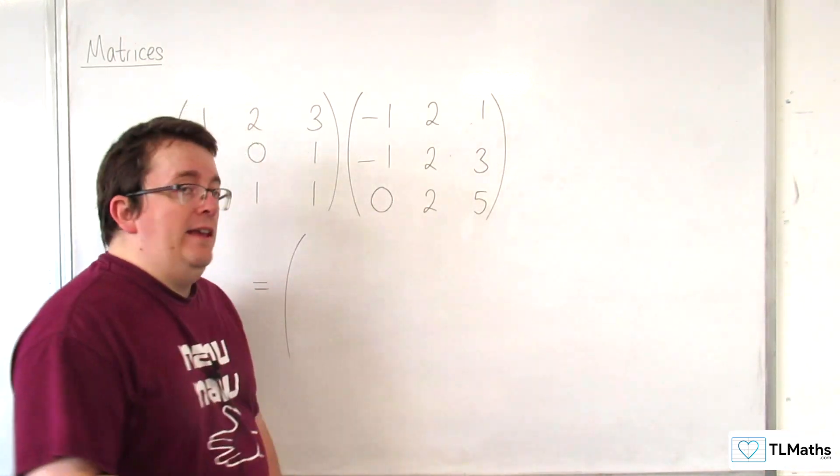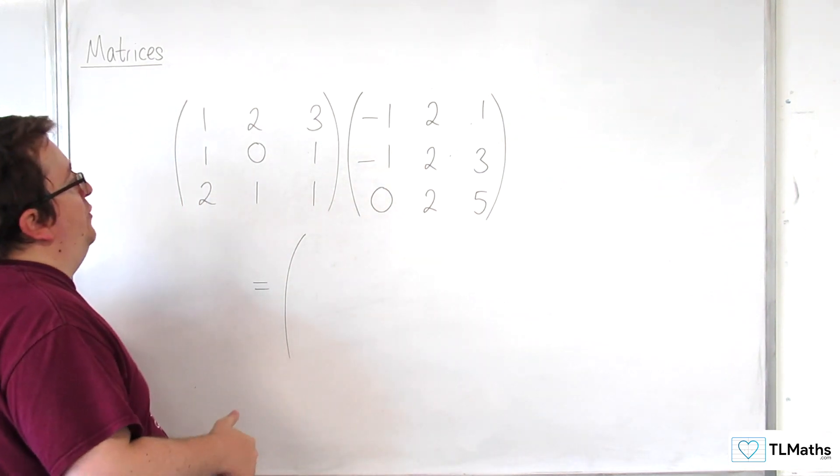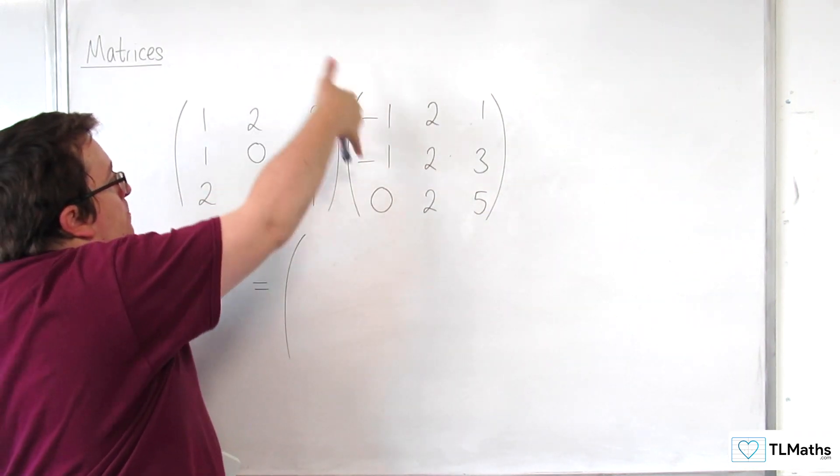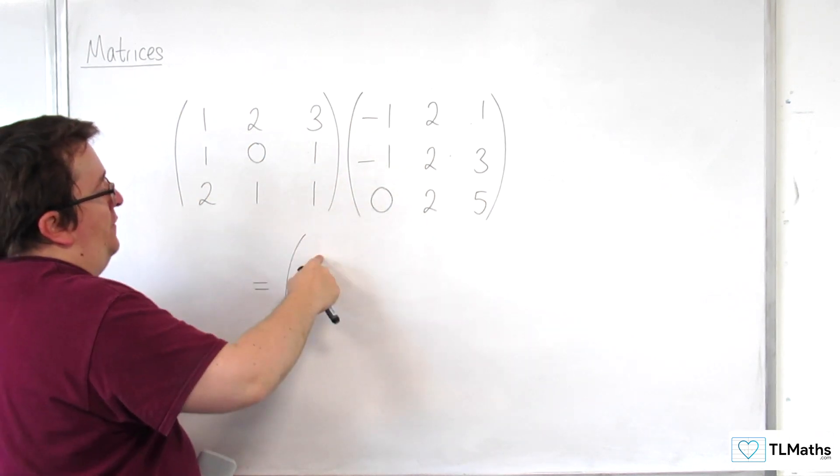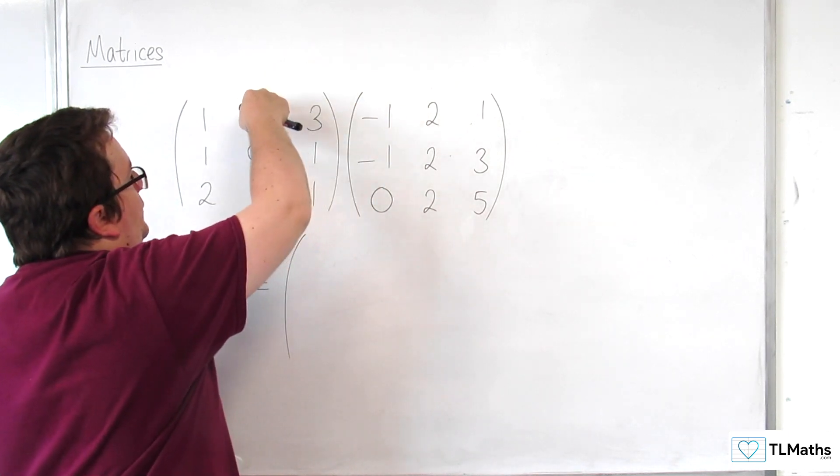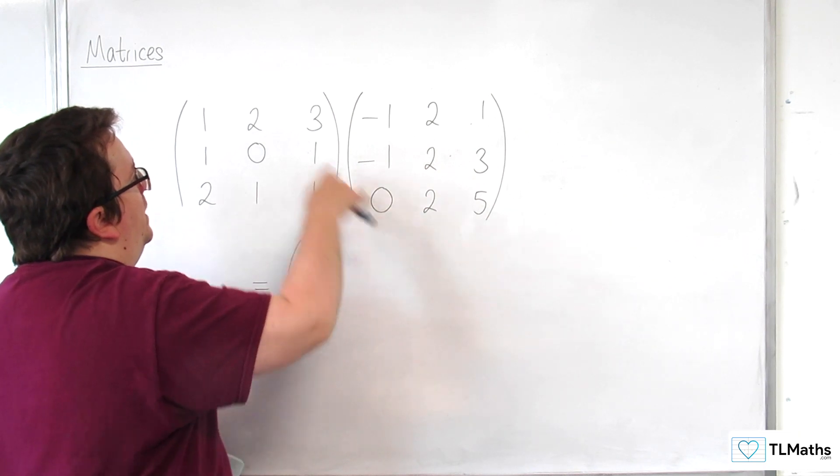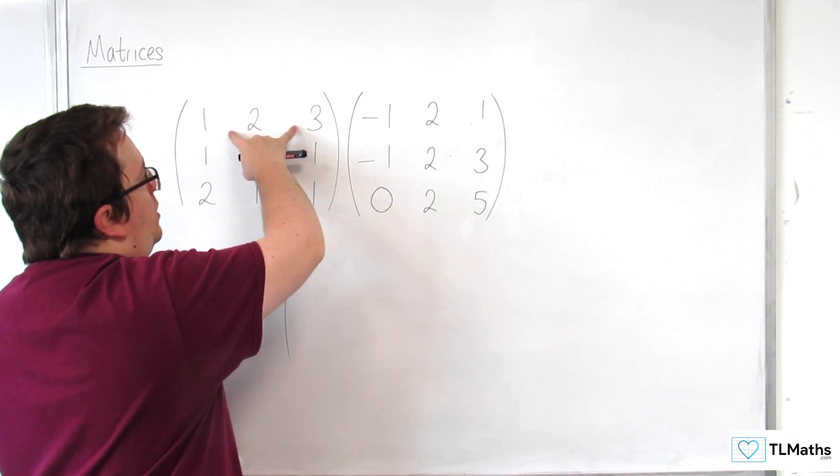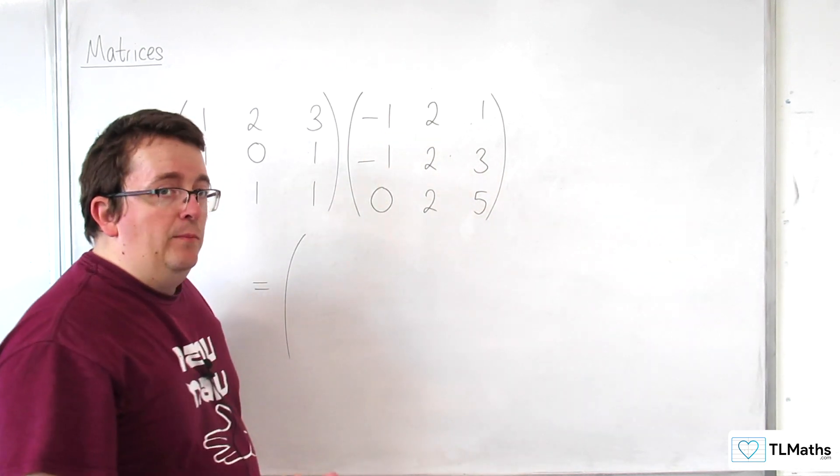So, just as it is with 2 by 2 matrices, what we do is we multiply row by column. So, for our first entry here, we're going to get 1 times -1, plus 2 times -1, plus 3 times 0. So, this row, the entries in this row, multiply the entries in this column, and then we add them together.